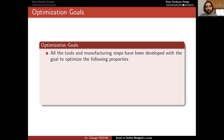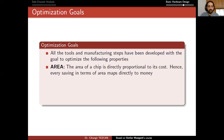Let's look at optimization goals. All the tools and manufacturing steps have been developed with the goal to optimize the following properties. The first thing is to optimize area. The area of a chip is directly proportional to its cost; hence, every saving in terms of area maps directly to money.